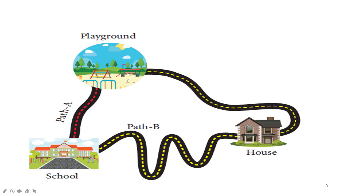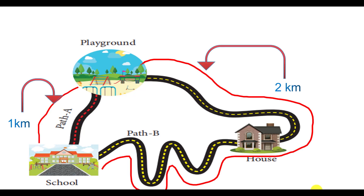Uma and Priya are friends studying in the same school. After school hours, they go to the nearby playground, play games, and return back home. One day, Uma told that she would reach the playground after visiting her grandma's house. Take a twine and measure the length of the two paths. Let us measure path A from school to playground — it is 1 kilometer. The distance from school to grandma's house and then to the playground is 2 kilometers.